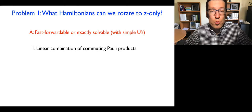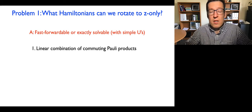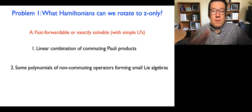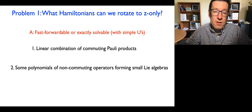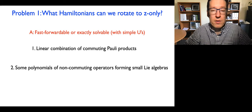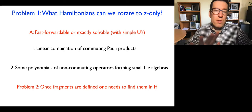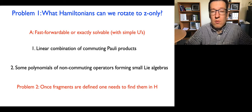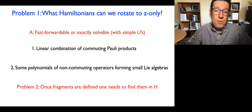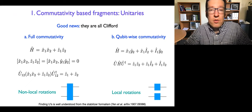We use two examples in this work. One is a linear combination of commuting Pauli products — something you can always rotate into all Z's — which are easy operators to deal with. The second example is a polynomial of non-commuting operators with the condition that the non-commuting operators form some small Lie algebras. I'll discuss how Lie algebras help make these operators exactly solvable and usable in the measurement process. Once we've figured out what operators to use for measurement, we need to find them in the given Hamiltonian — that's the partitioning problem.